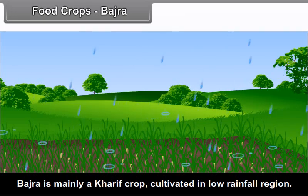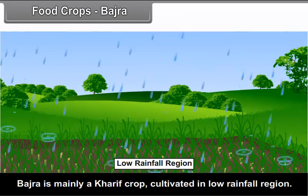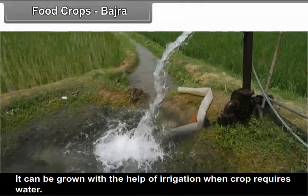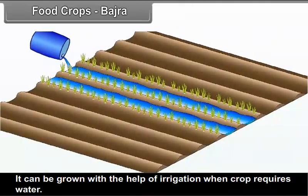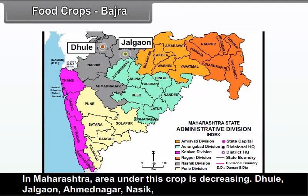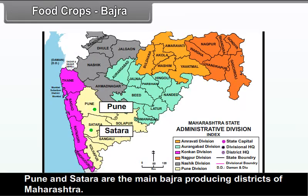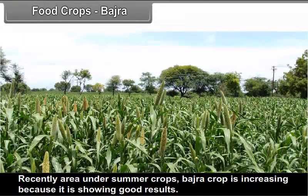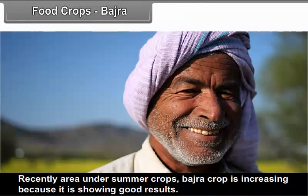Bajra: Bajra is mainly a Kharif crop cultivated in low rainfall regions. High temperature and light soils are required. It can also be grown with irrigation when required. In Maharashtra, the area under this crop is decreasing. Dhule, Jalgao, Ahmadnagar, Nasik, Pune, and Satara are the main Bajra producing districts. Recently, the area under summer Bajra crops is increasing because it is showing good results.